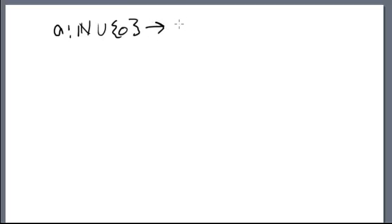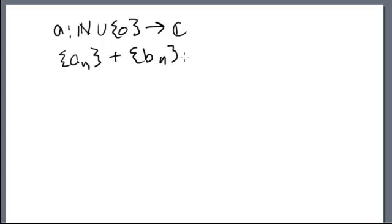To recap last time: we constructed a commutative ring out of sequences. The sequences are functions from the natural numbers, including zero, into the complex numbers. We defined addition by adding corresponding terms.